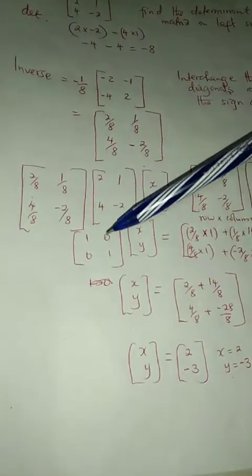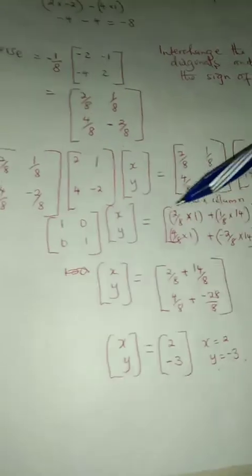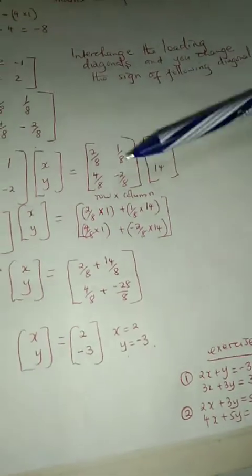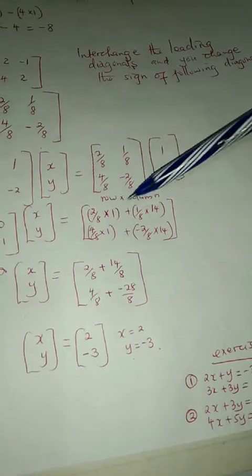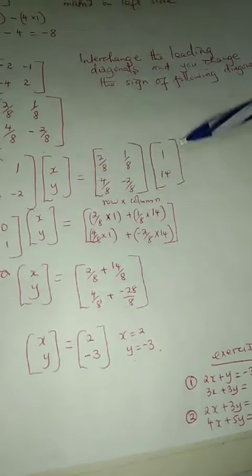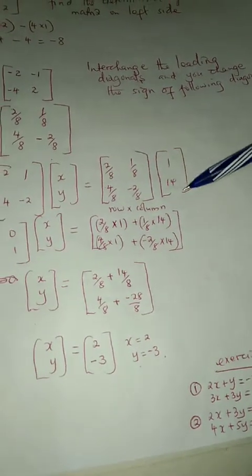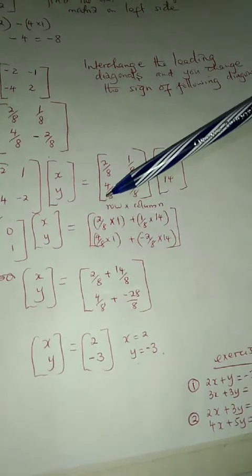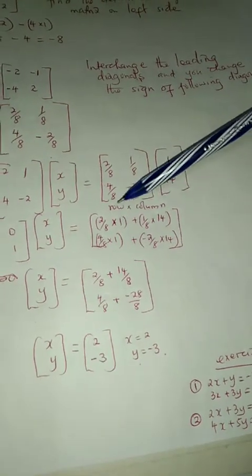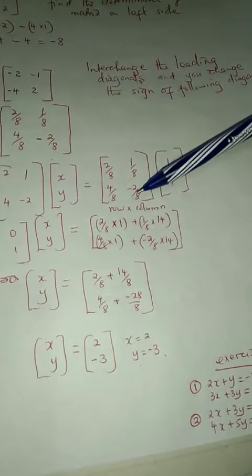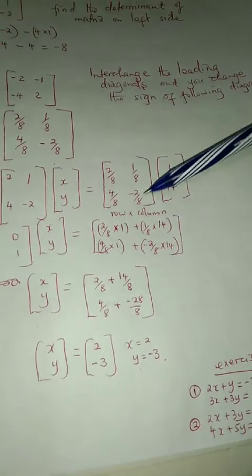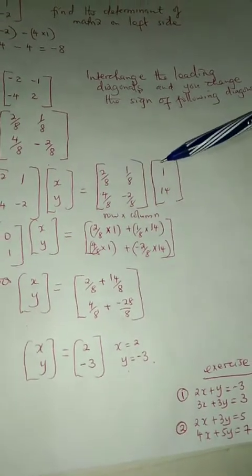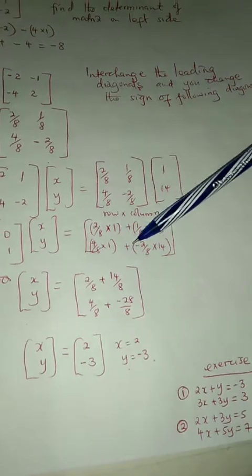This side here is now where the problem will start. We multiply row by column: 2 over 8 times 1 plus 1 over 8 times 14. There you also have 4 over 8, 4 over 8 times 1, negative 2 over 8 times 14. You multiply a row and a column, don't forget that.